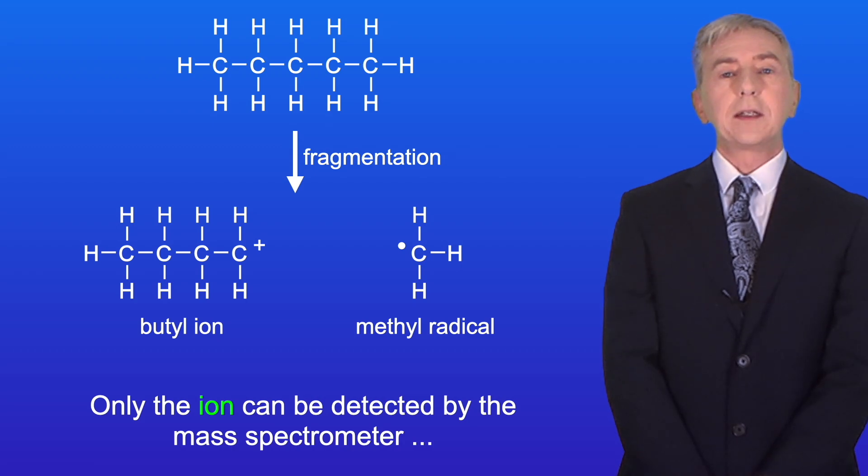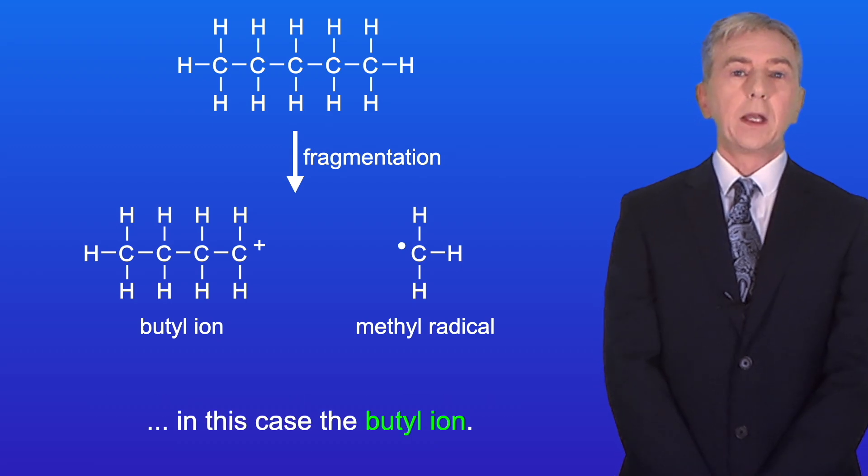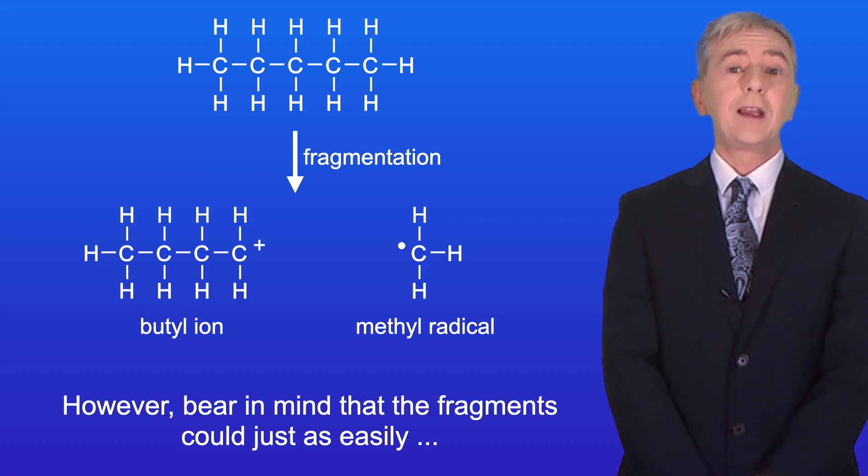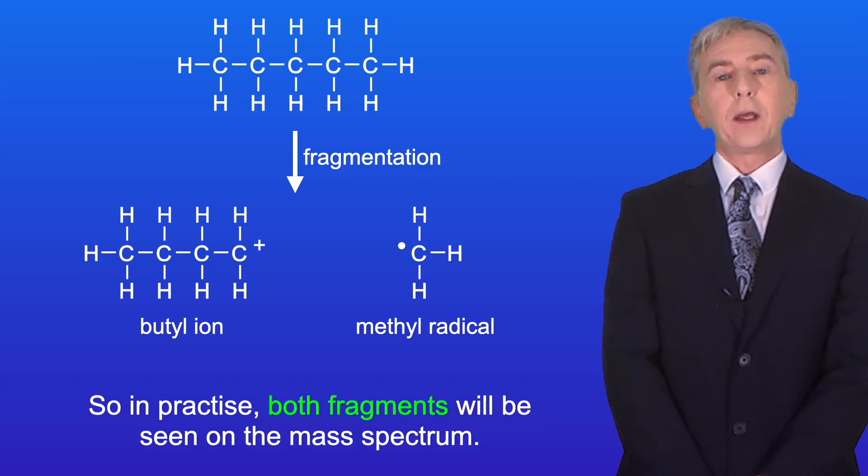Only the ion can be detected by the mass spectrometer, in this case the butyl ion. However bear in mind that the fragments could just as easily form a methyl ion and a butyl radical. So in practice both fragments will be seen on the mass spectrum.